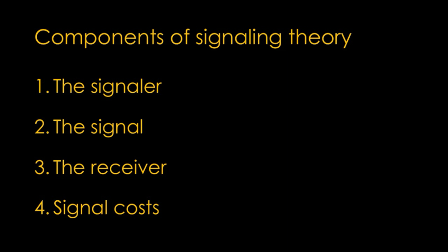Think about what qualities you want your team members to recognize. What signals are you sending through your behaviors, communications, and decisions? Now that we've got the basics down, let's break signaling theory into its four key components: the signaller, the signal, the receiver, and signal costs.